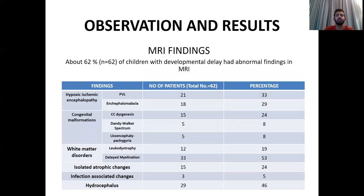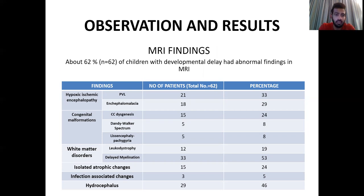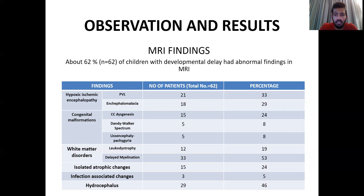Coming to the MRI findings: out of 100 children, 62 percent — that is 62 children with developmental delay — had abnormal findings on MRI. The findings included hypoxic ischemic encephalopathy, congenital malformations, white matter disorders, isolated atrophic changes, infection-associated changes, and hydrocephalus. In hypoxic ischemic encephalopathy, there were periventricular leukomalacia and encephalopathy — 21 patients with periventricular leukomalacia and 18 patients with encephalopathy, giving percentages of 33 and 29 percent respectively.